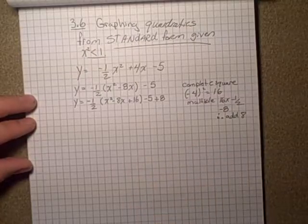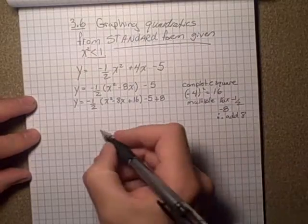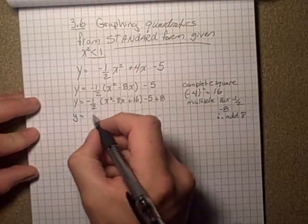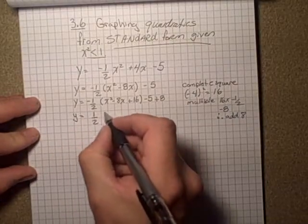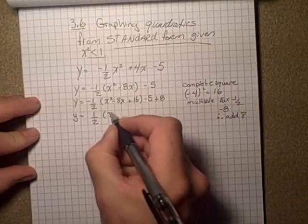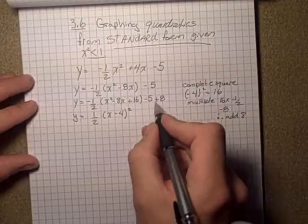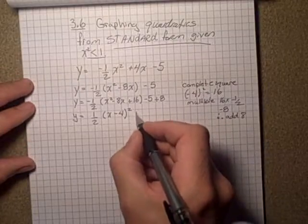So now we'll complete our vertex graphing form here. So take the x minus 4 all squared out there, and then combine these two to get plus 3.